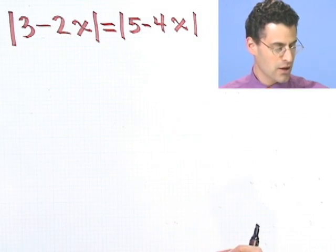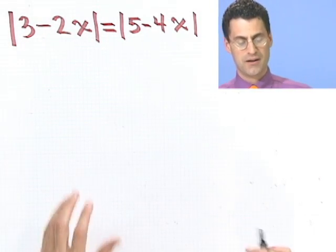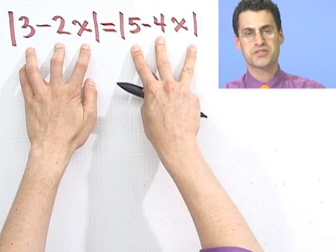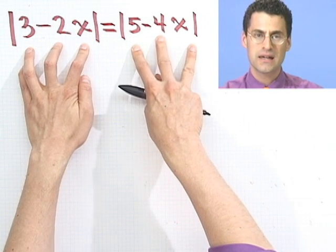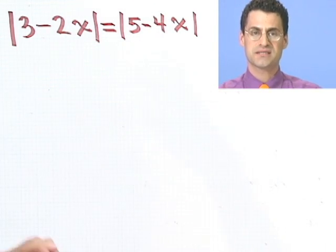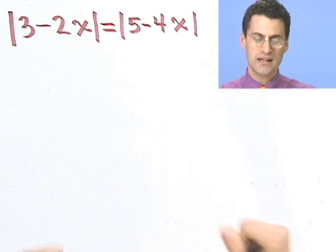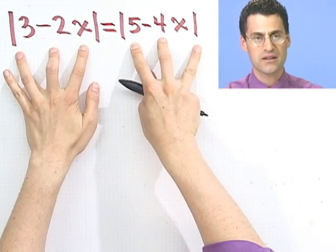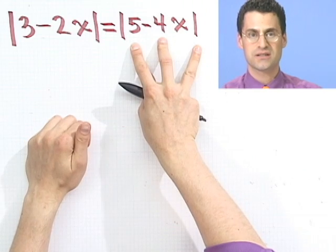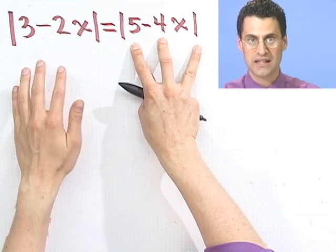How would you handle this? Well, all you have to remember is if two numbers are equal in absolute value, what does that mean? It means they must have the same size, but they might be off by a negative sign. So even though there are two absolute values, there are only two equations lurking in the background.